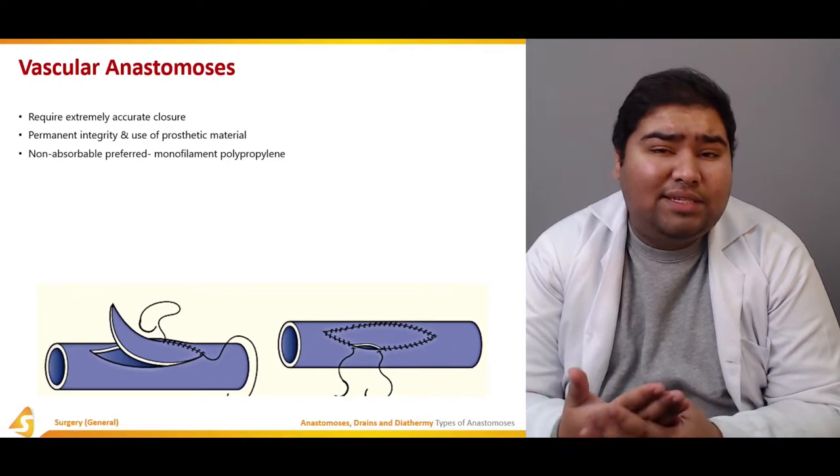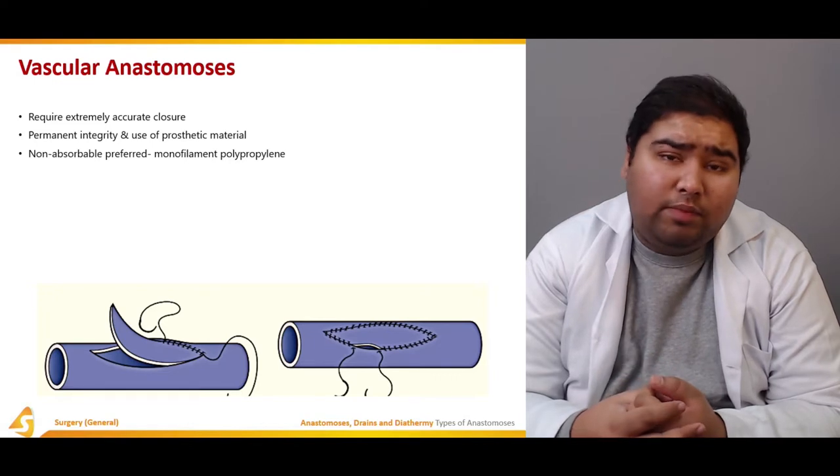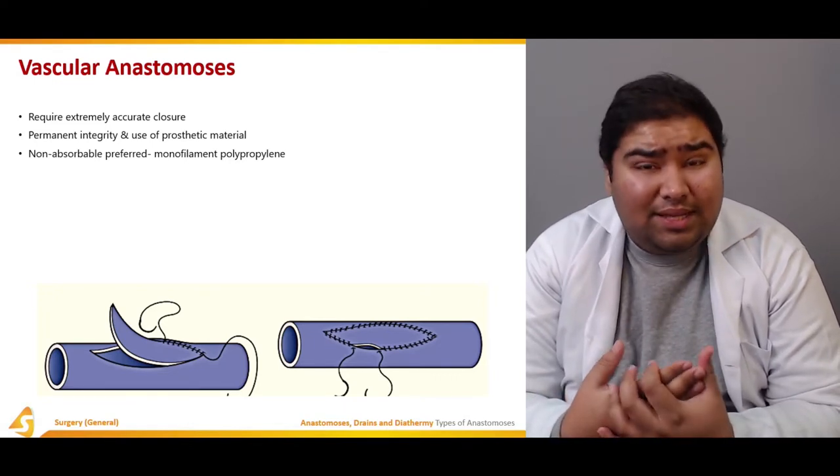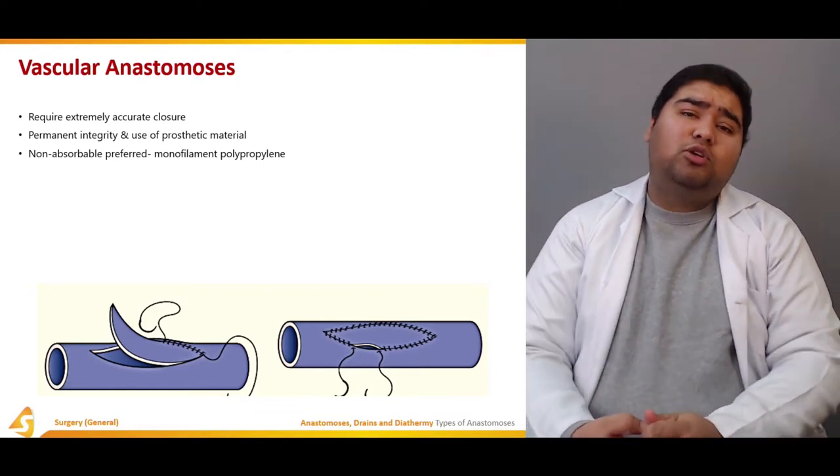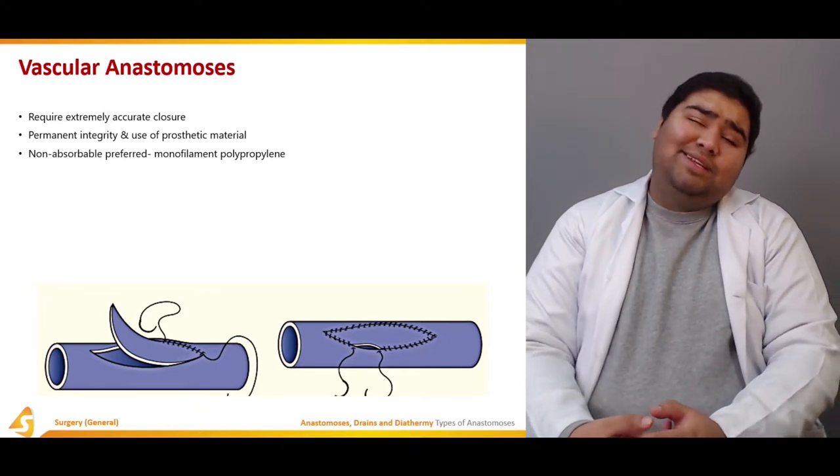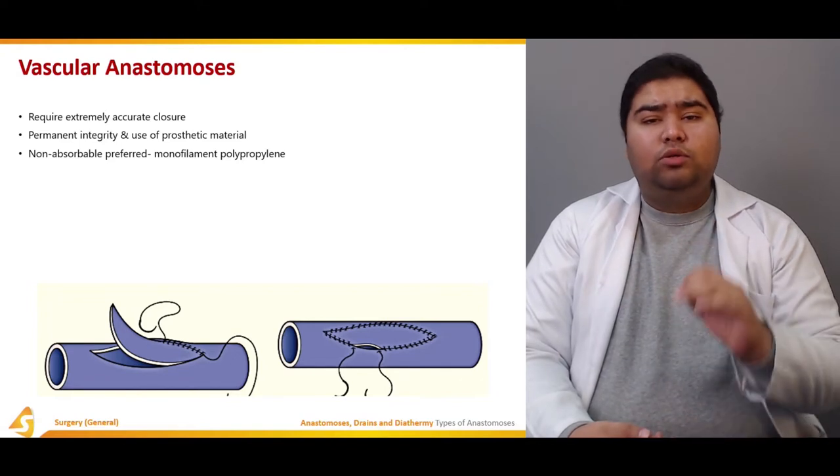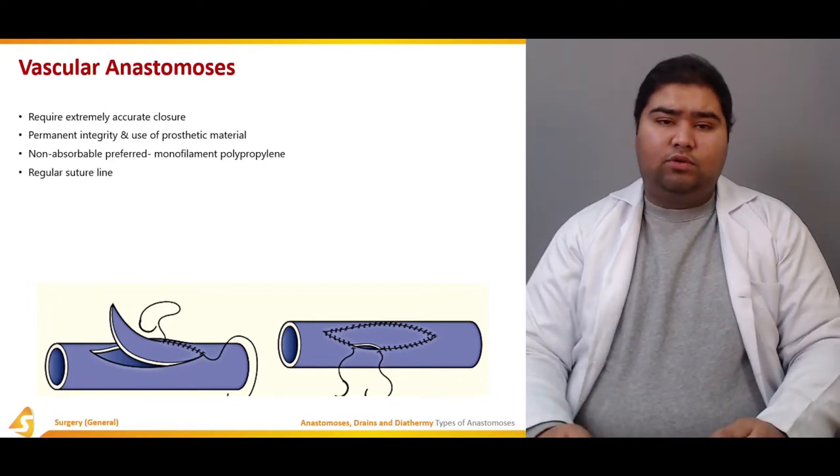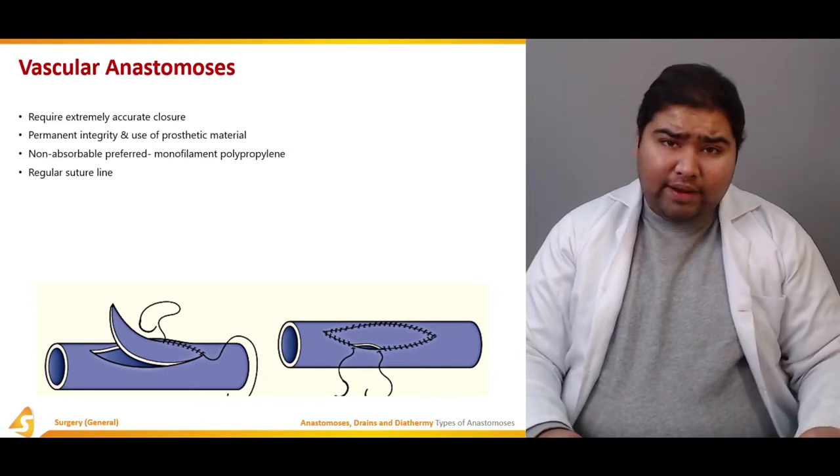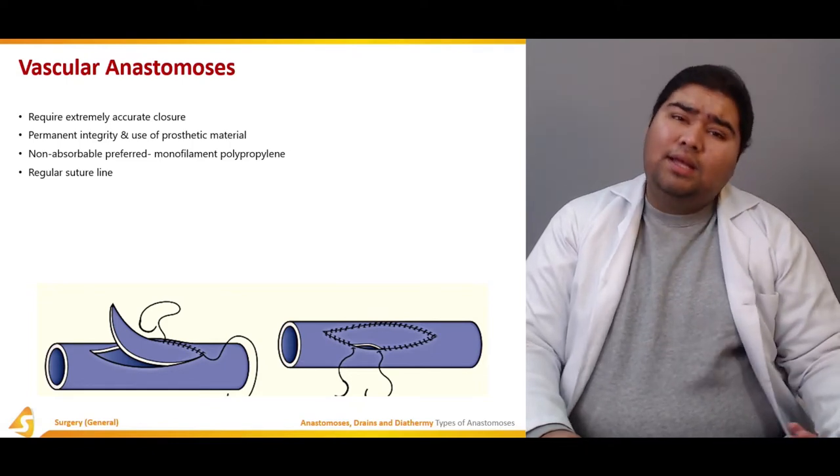There is a half-life - a time till which the non-absorbable suture stays. After that time, even the non-absorbable suture is disintegrated and loses its strength. However, the time during which it maintains its strength is the time the vessel repairs itself. So it is always recommended to use a non-absorbable suture in vascular anastomosis. The suture line should be regular - this is very important because an irregular suture line would cause thrombosis and distal thromboembolism.